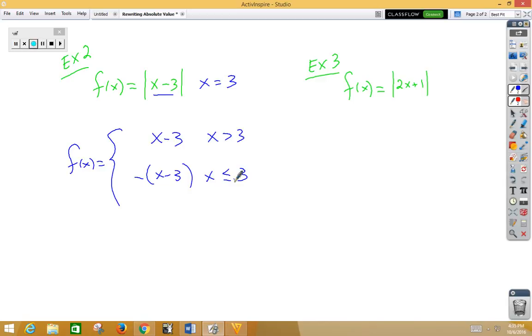In our third example, again, we're going to write this once positively and once negatively. We have f of x in two pieces. Set 2x plus 1 equal to 0. So 2x is negative 1, x is negative half. We have x is greater than negative half, x is less than or equal to negative half.